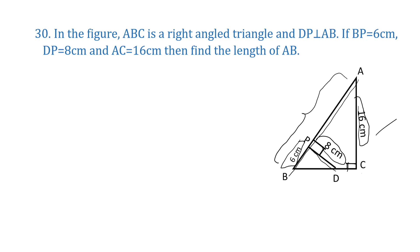Since it is a 3 mark question, we have to write all the given items. Angle C is 90 degrees, or angle ACB is a right angle. DP perpendicular to AB, or angle P is 90 degrees. BP is 6 cm, DP is 8 cm, AC is 16 cm.